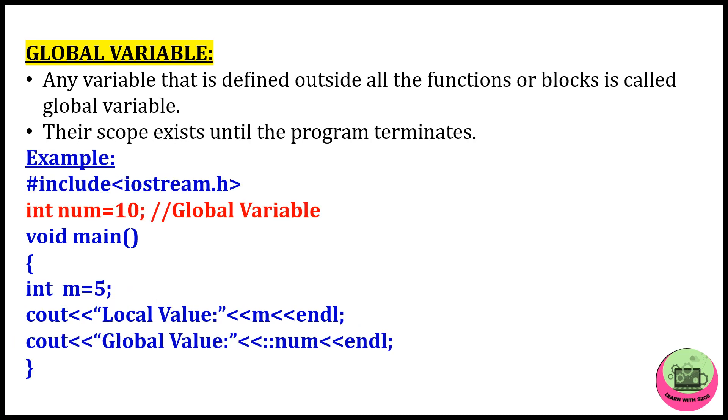Next is the global variable. Any variable that is defined outside all the functions or blocks is called global variable. Now we have seen it was declared inside the main function, but here it is declared outside the main function. Num is declared outside the main function and here m is our local variable because it is declared inside the main function. So that is the difference between the local variable and global variable.